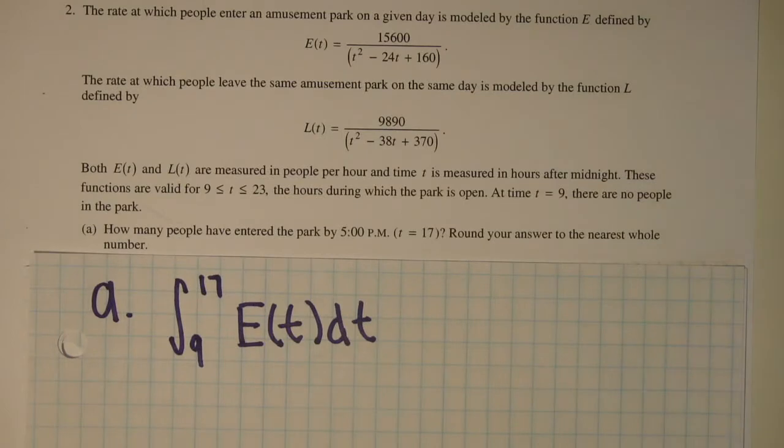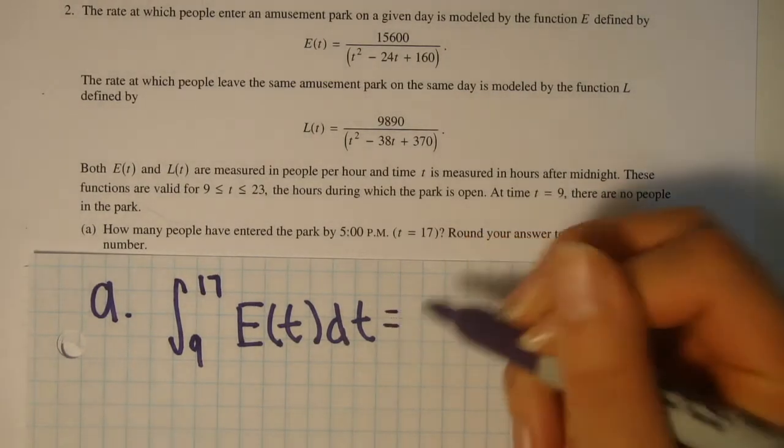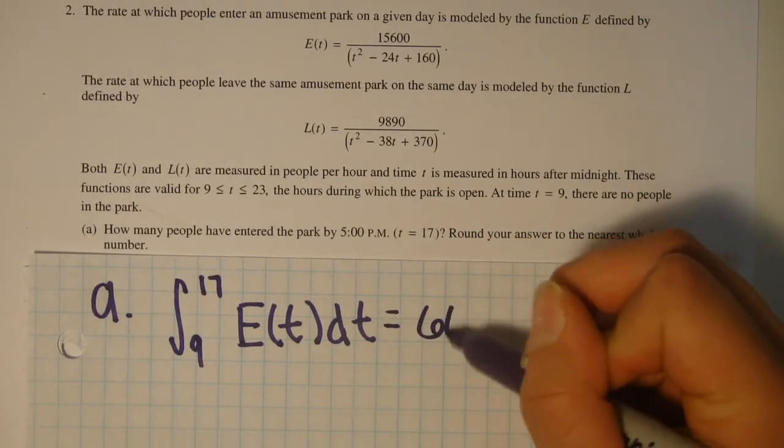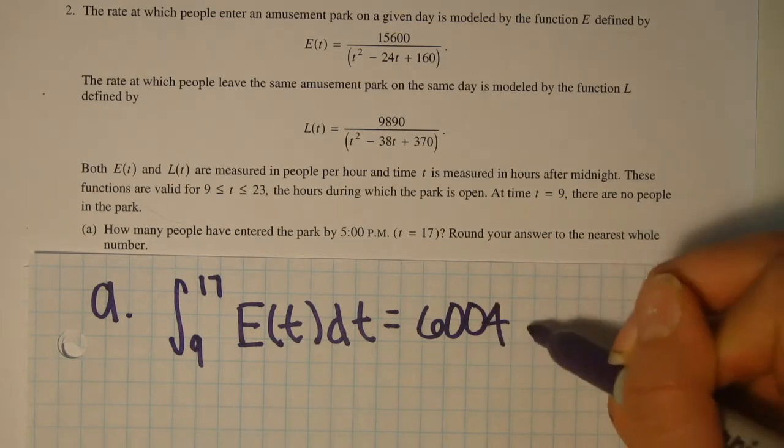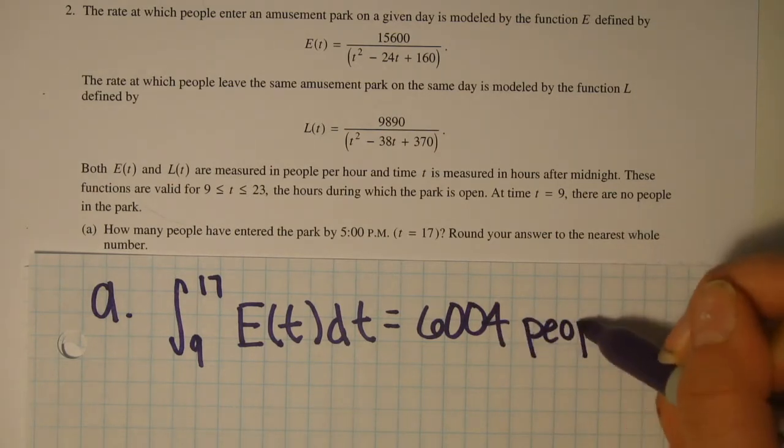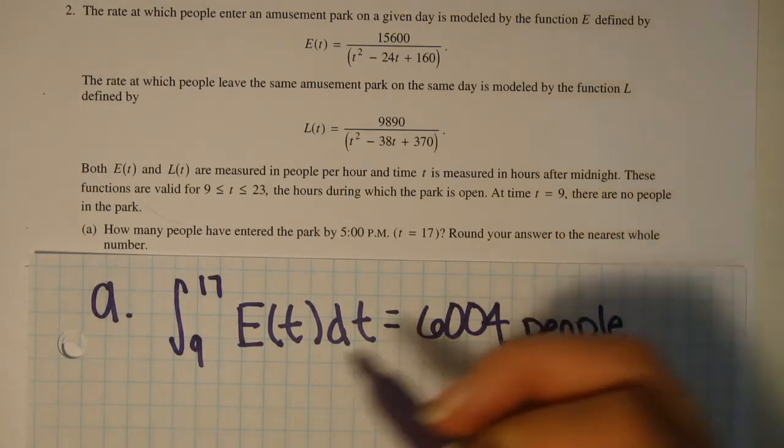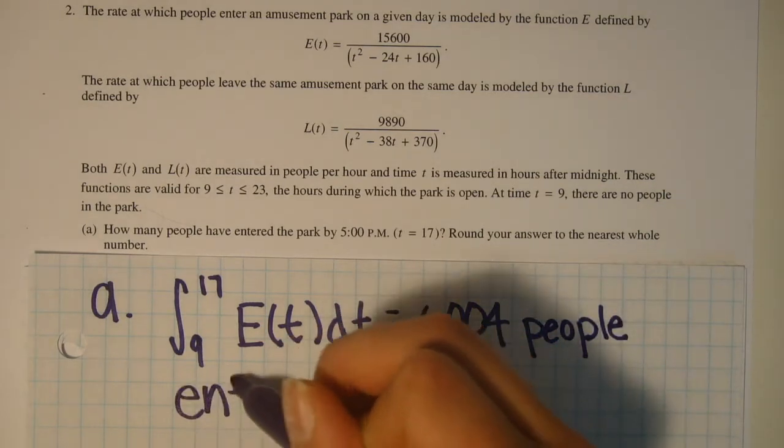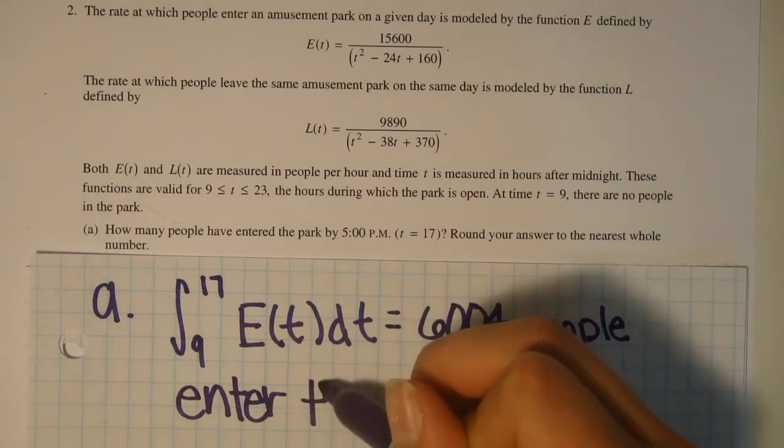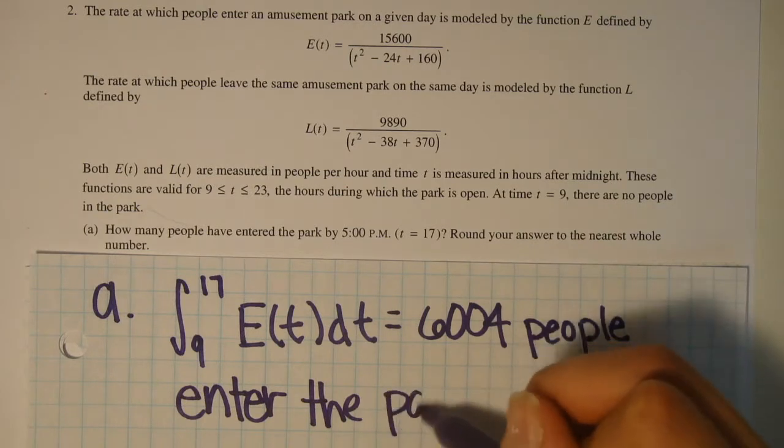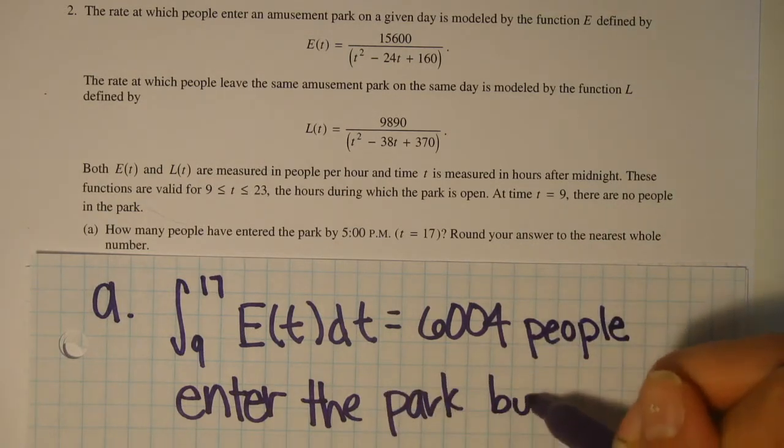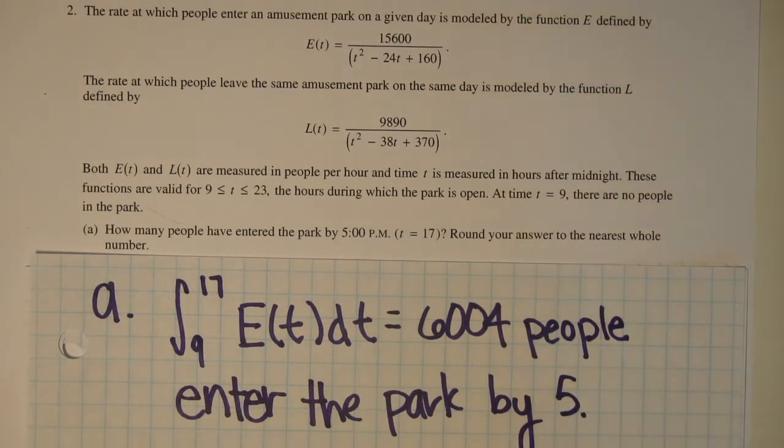You want to make sure that you are as clear as possible on your answers so you can write that 6,004 people enter the park by 5 and that is our final answer.